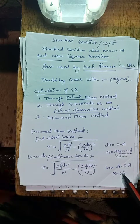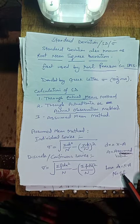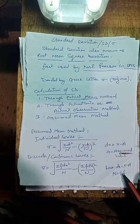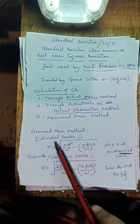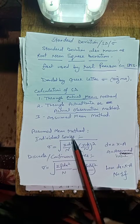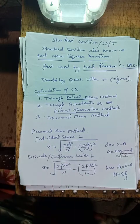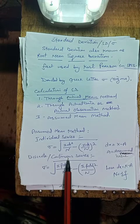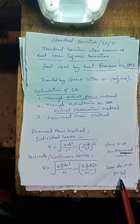दोनों में dx का मतलब x minus a होता है। A means adjusted value. In case of individual series, n means number of items. But in case of discrete and continuous series, n means summation f.